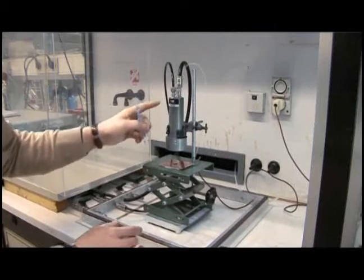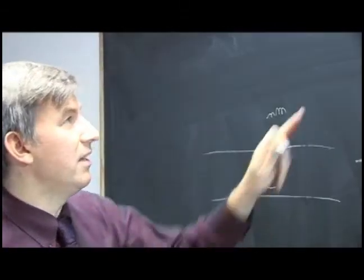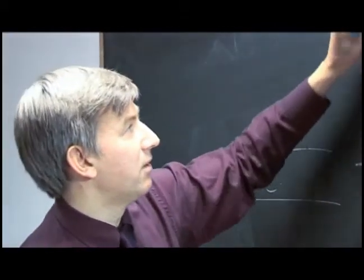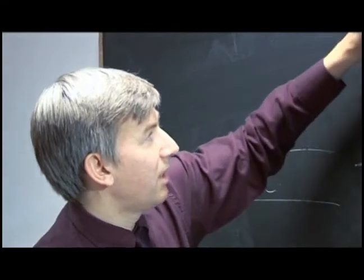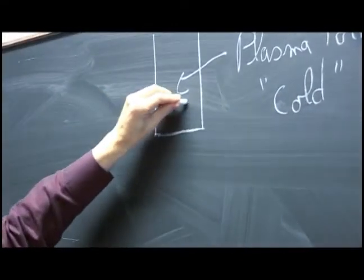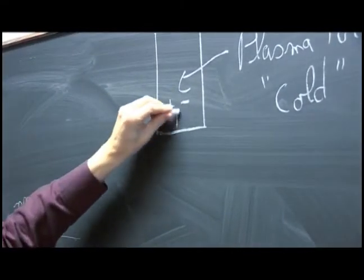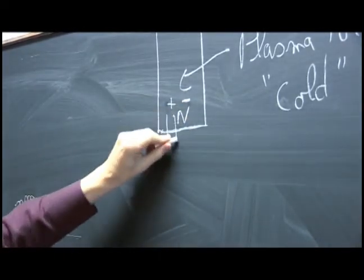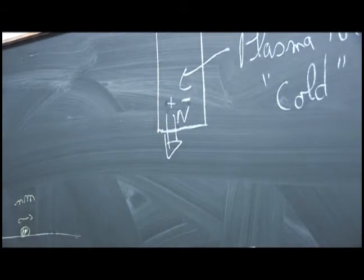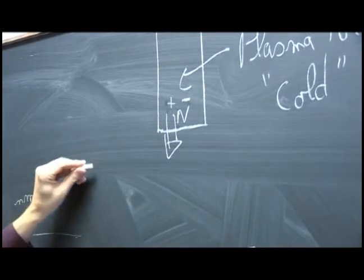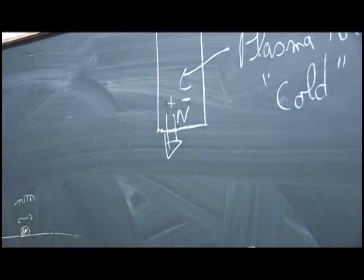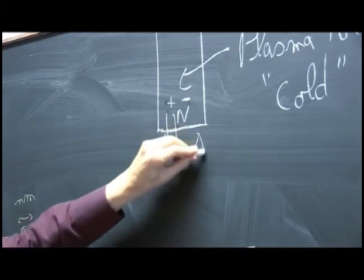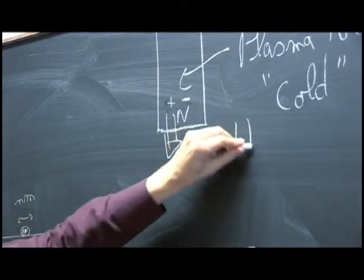Then we will use a plasma system. In this torch, we will generate ions with electrons and neutrals, plus, minus, and neutral. Then they will be sent out of the torch. And the gas that will be used is either argon or helium.